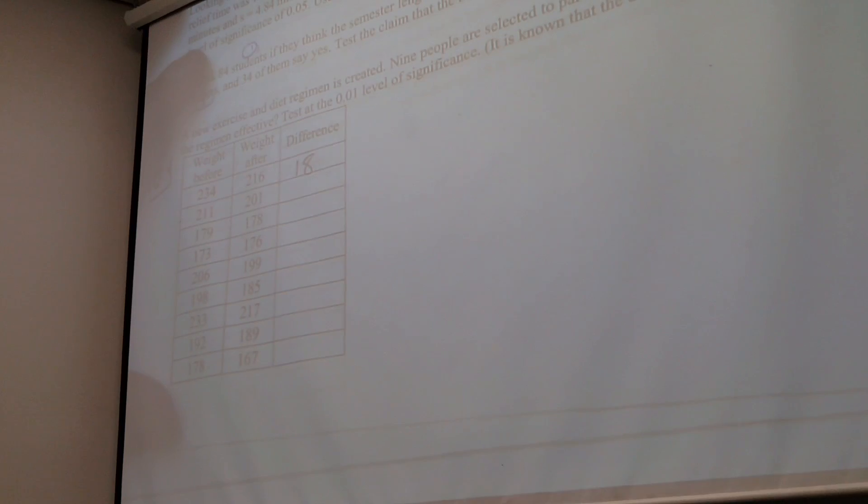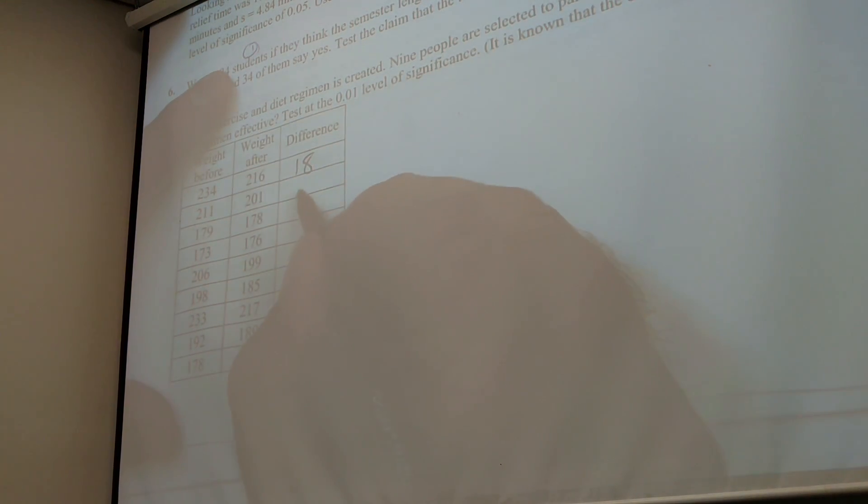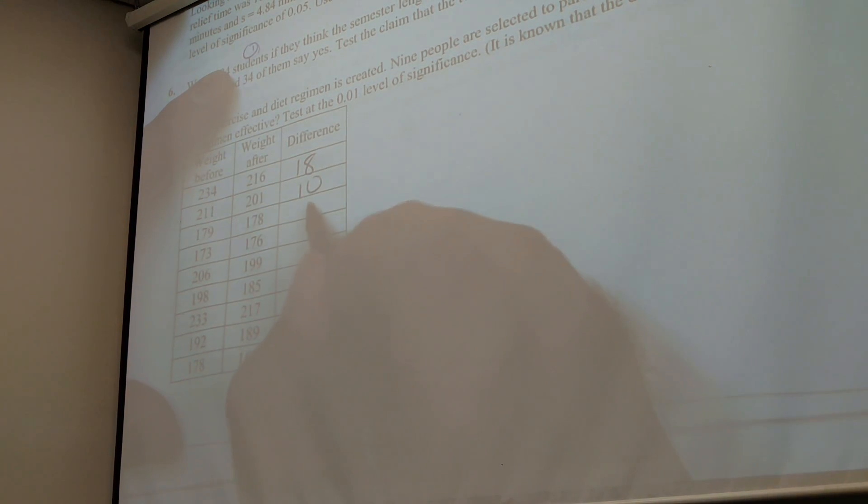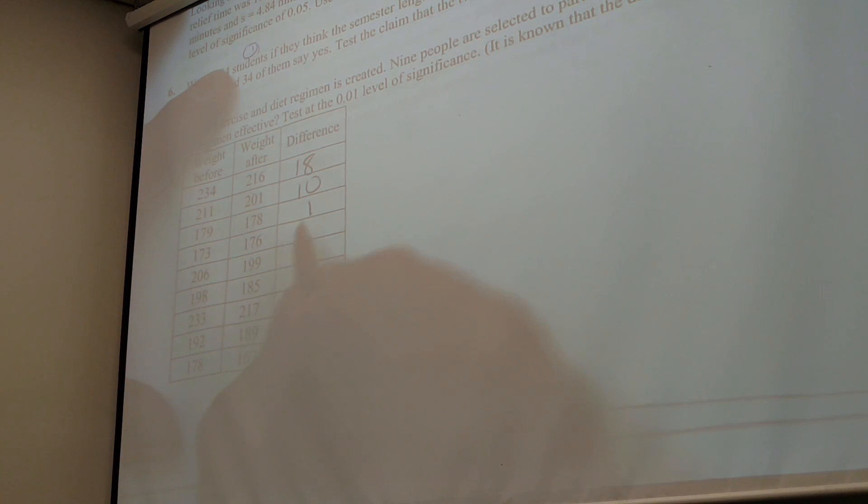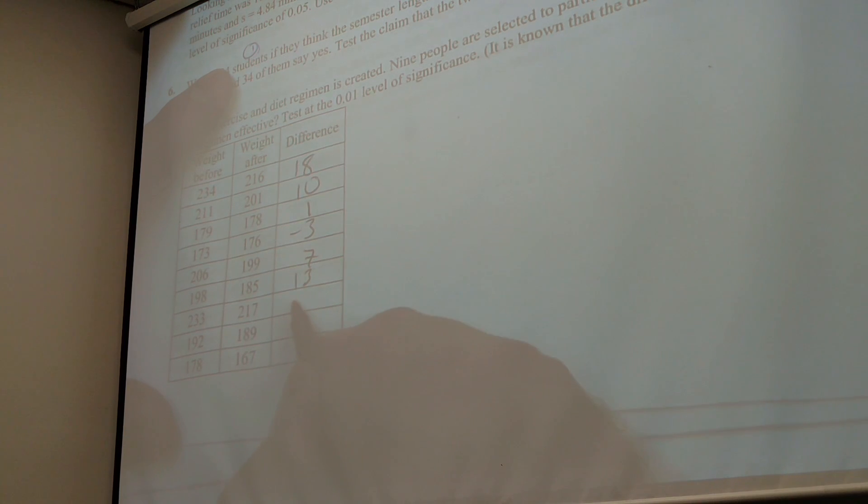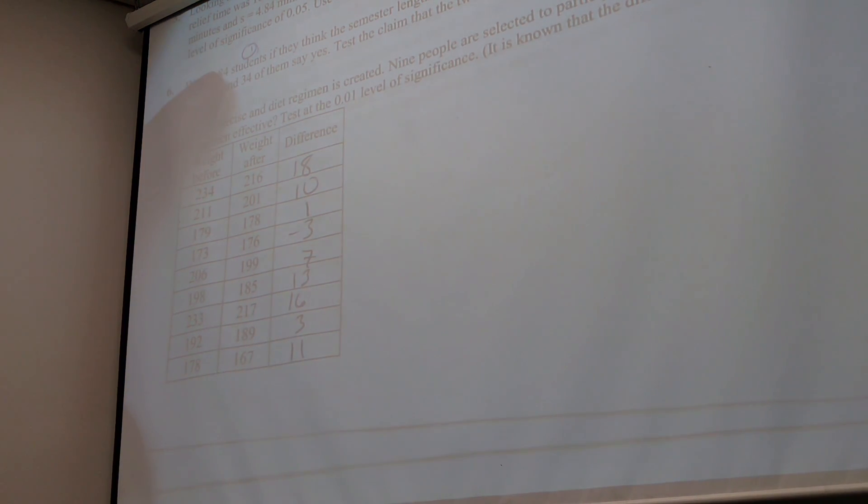So you're trying to show evidence that it's not zero. In this case, I probably want to show evidence that the difference is greater than zero. Well, it depends on how you subtract. But if you do this minus this to see how much weight lost. So do that for all these and do all the differences. Like this is 18, right? You guys cool with me? See what's going on? This is 10. So what would, and this is 1. What would this one be? Negative 3. I like it. And then 7, 5, 13, 16, 3, 11. Cool. Yes.